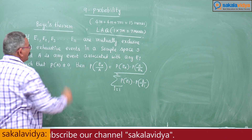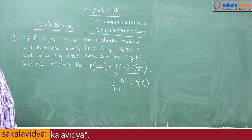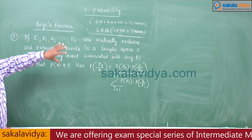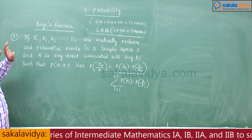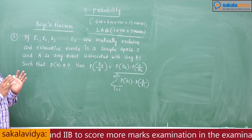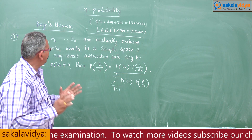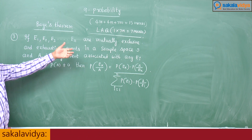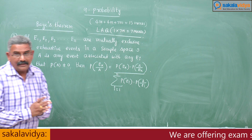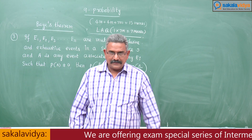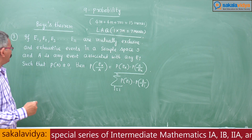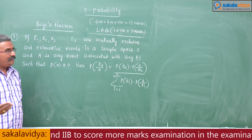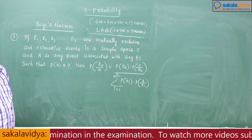In the examination you may be asked to state and prove Bayes' Theorem. The statement is compulsory — you have to remember and write it in the examination. Proof: E1, E2, E3, ..., En are mutually exclusive and exhaustive events in a sample space. That means E1 intersection E2 intersection ... intersection En equals null set, and E1 union E2 union ... union En equals S, the sample space.